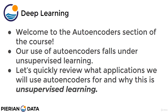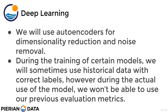We either already knew what the image label was — whether it was a dog or a cat, or whether it was cancerous or benign, et cetera. So when we're dealing with autoencoders, our use cases for them really fall under unsupervised learning. I want to quickly review what applications we're going to be using autoencoders for and why this is labeled as unsupervised learning instead of supervised learning.